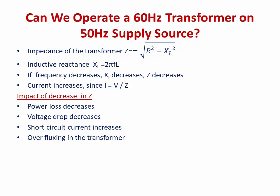There will be power loss decreases and voltage drop decreases — both are very good signs. But look at the other two effects: short circuit current increases, and over-fluxing occurs in the transformer. These last two parameters — short circuit current and over-fluxing — play a very important role in deciding whether a 60 Hz transformer can be used on a 50 Hz supply.